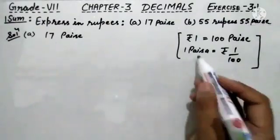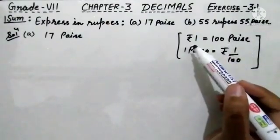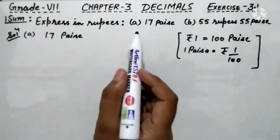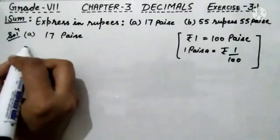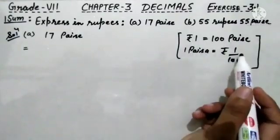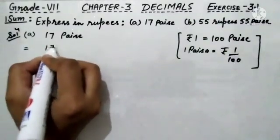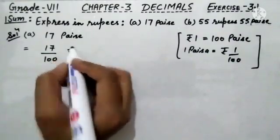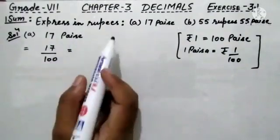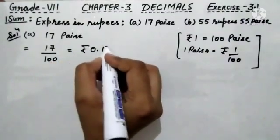Out of rupees and paise, which term is the smallest one? Paise is the smallest term compared to rupees. When we have to convert the smallest term into the bigger term, we divide. So here, 1 rupee is equals to 100 paise, and 1 paise is equals to rupees 1 upon 100. Therefore, 17 paise will be equals to 17 divided by 100.